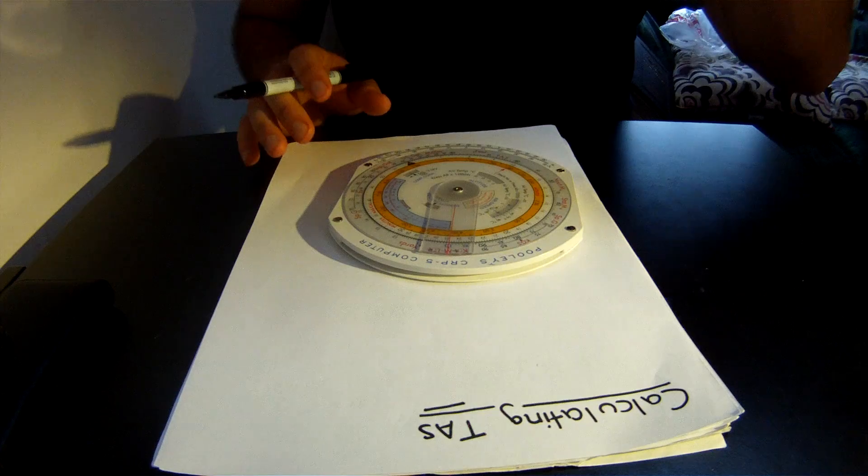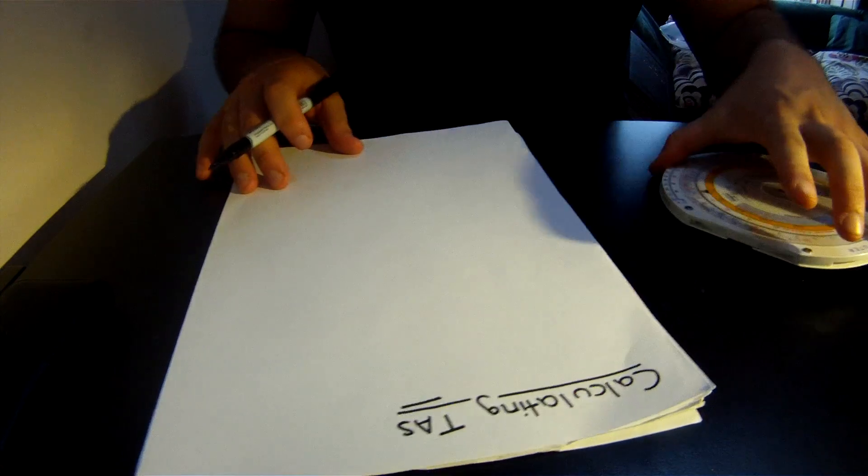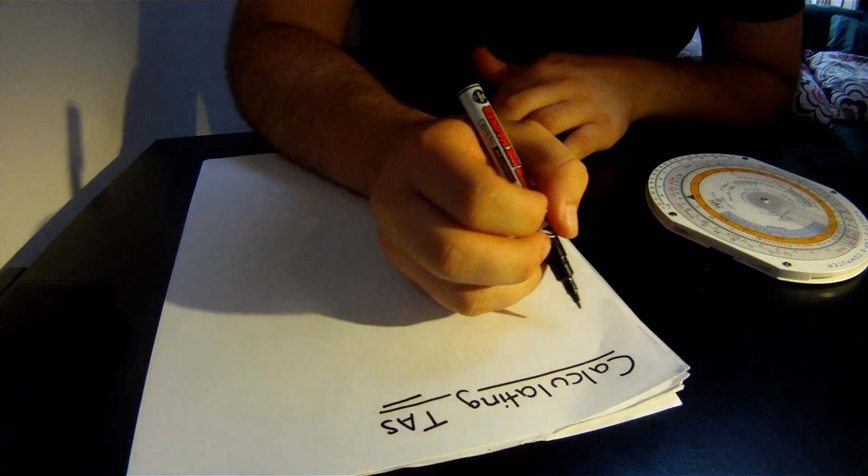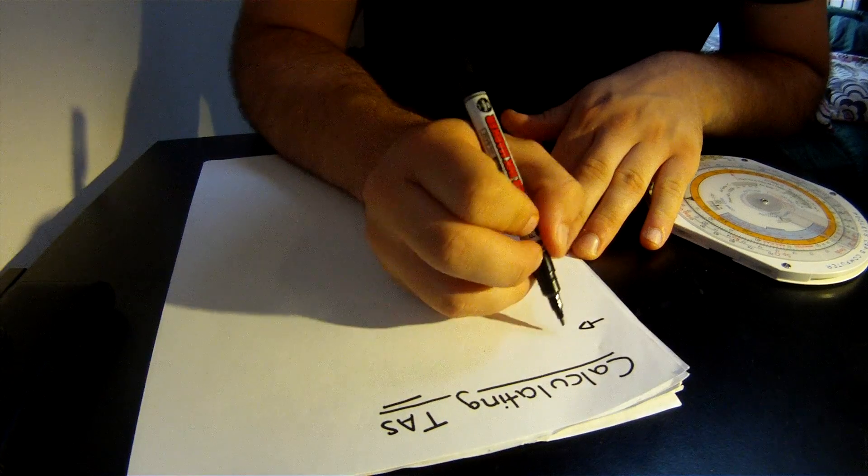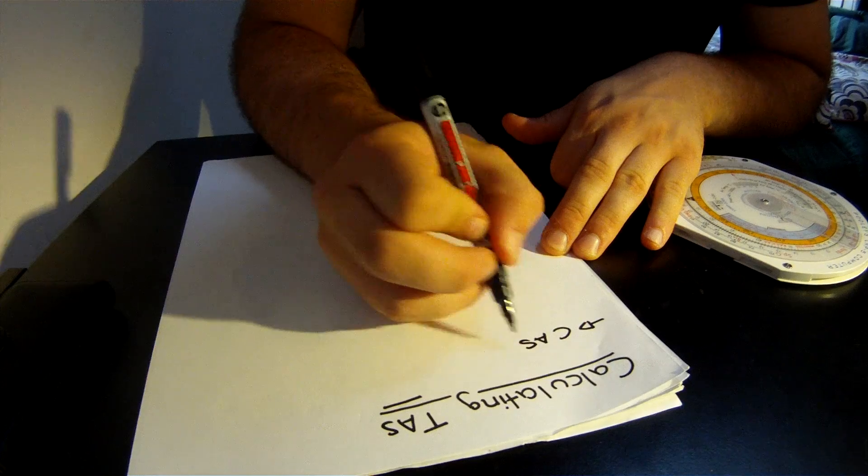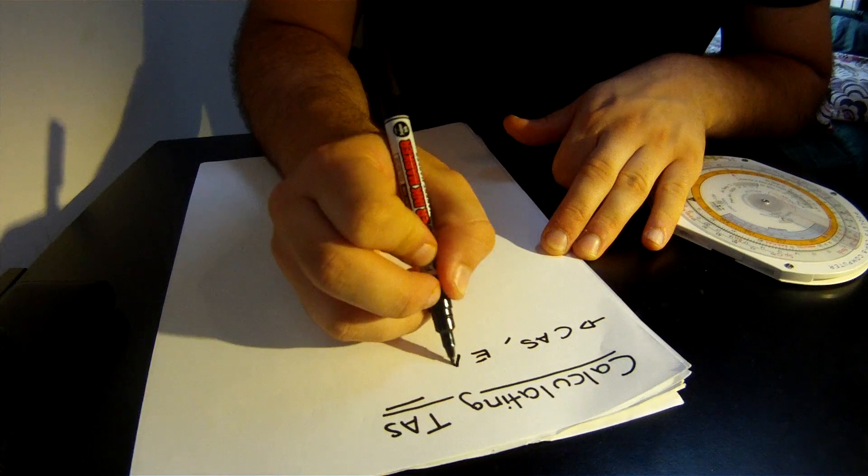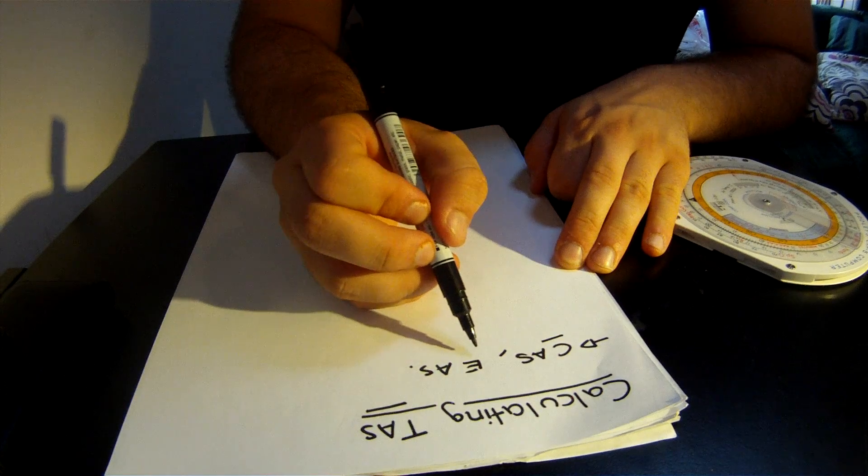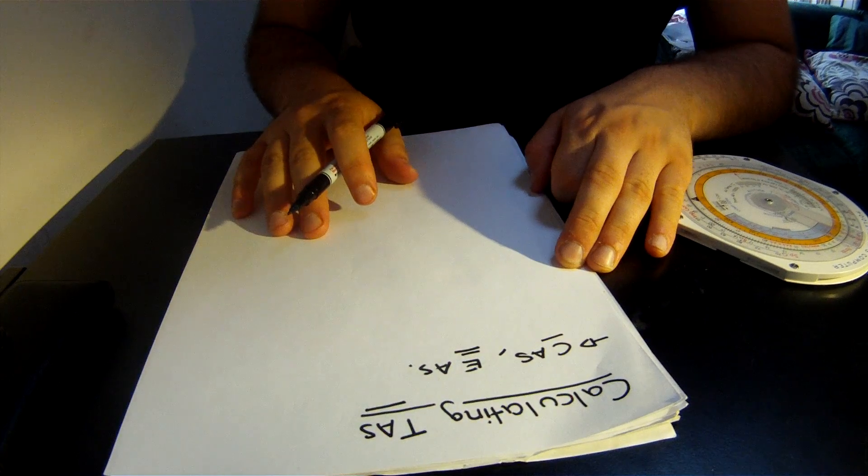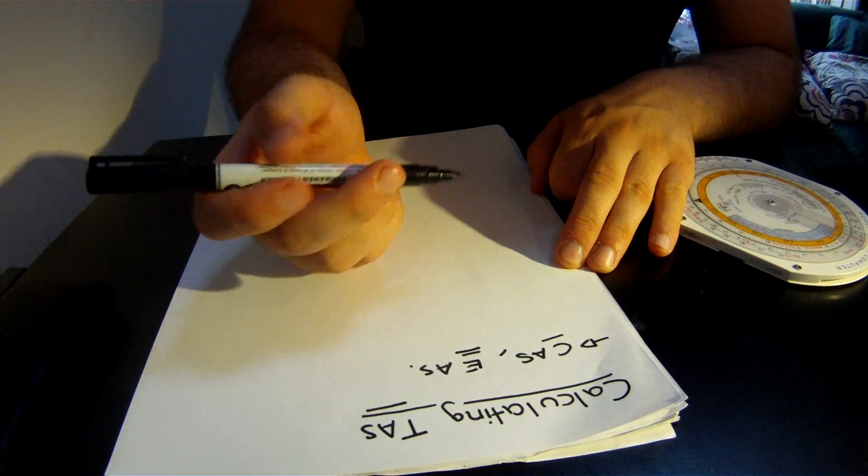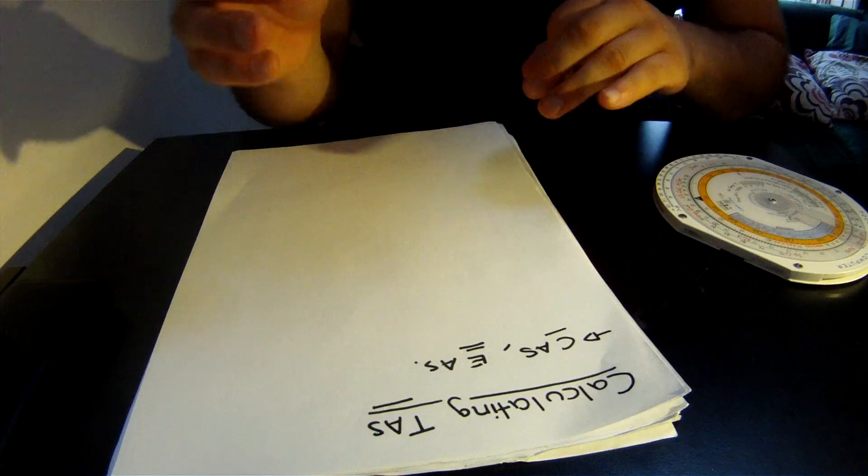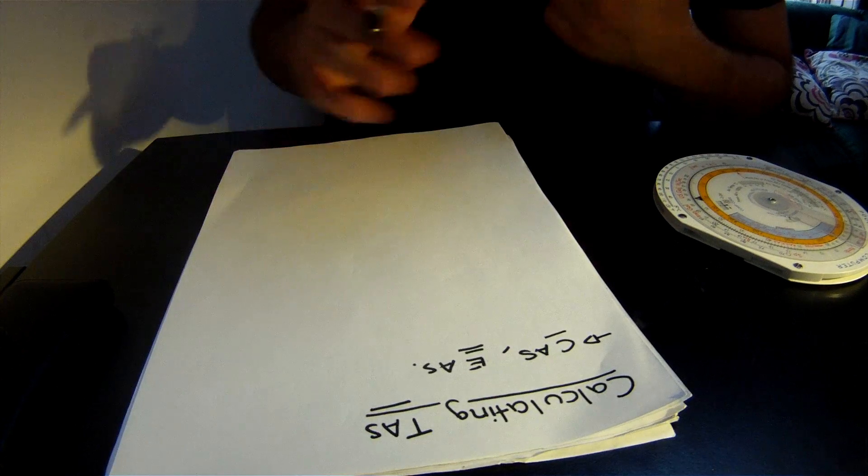For calculating airspeeds, you just need to understand some basic stuff. Sometimes in the questions they'll give you a CAS or an EAS. There you go, calibrated and—I'm really embarrassed because I forgot what this means. I'll look it up and jot it down.